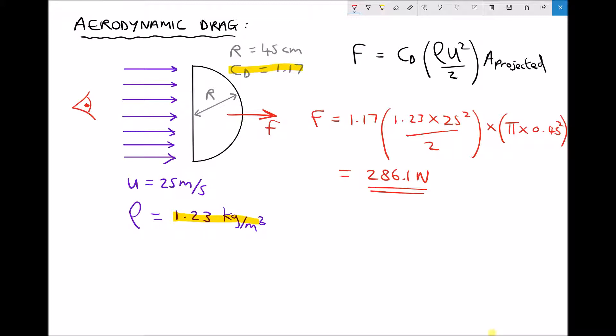Let's switch our hemisphere around and see what effect that has on the drag force. When we switch the hemisphere around, the drag coefficient drops to 0.42. Basically, the object becomes more aerodynamic. The air flows more easily over the hemisphere, so we expect less drag.